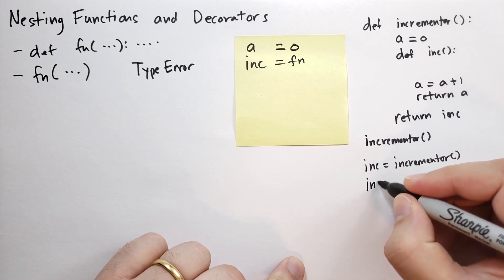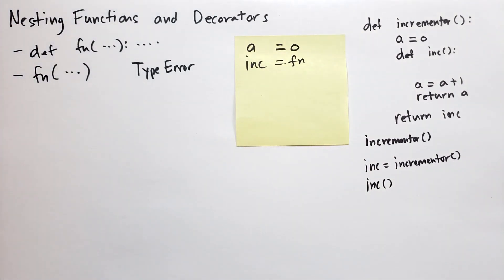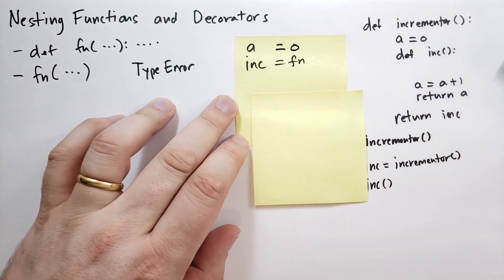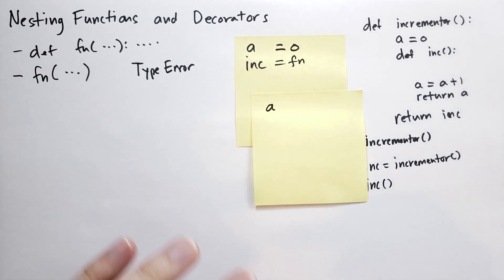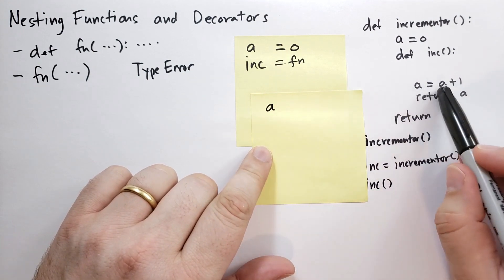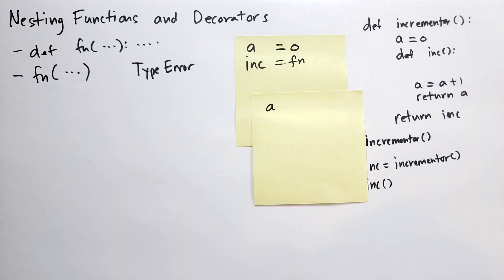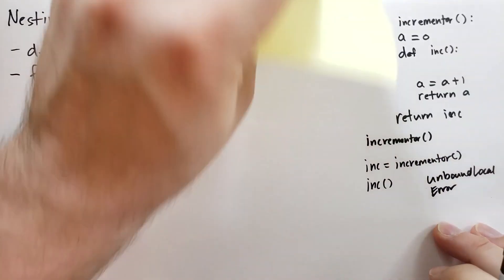And when we call inc, what's going to happen? Well, we're going to create a new namespace. And Python knows that in this namespace, we're assigning to a variable a, so it reserves a spot for a. And when we call a equals a plus one, it first looks up the value of a, it sees the a that's supposed to be declared locally, and it's going to give you an unbound local error. And this is what happens when you make this mistake.